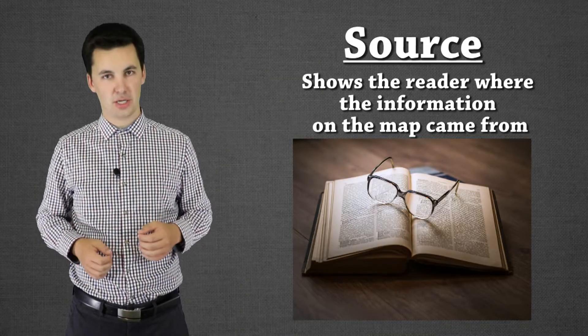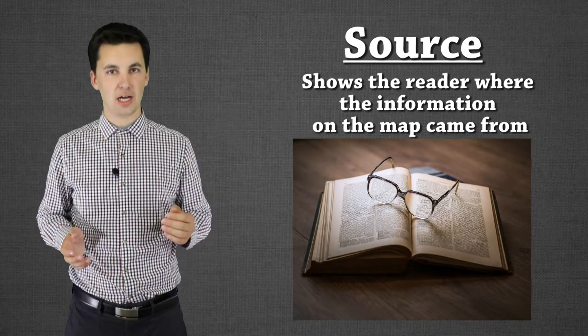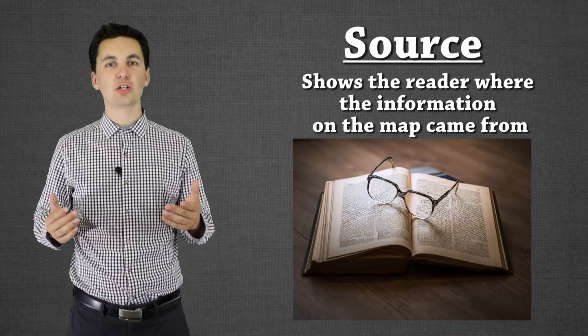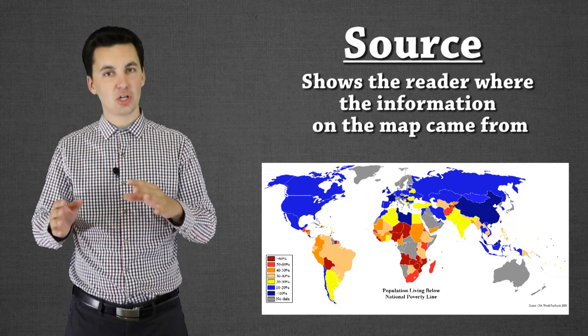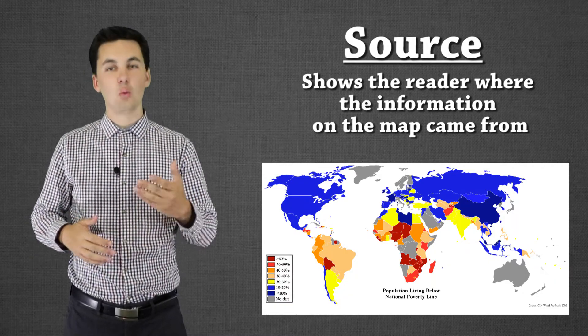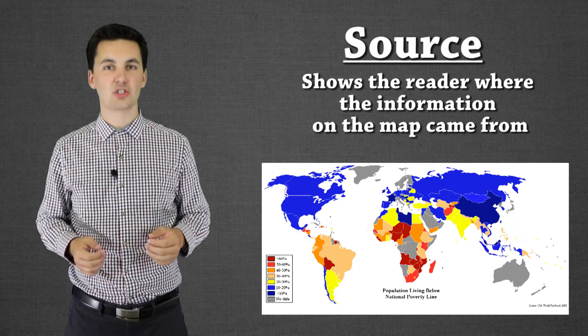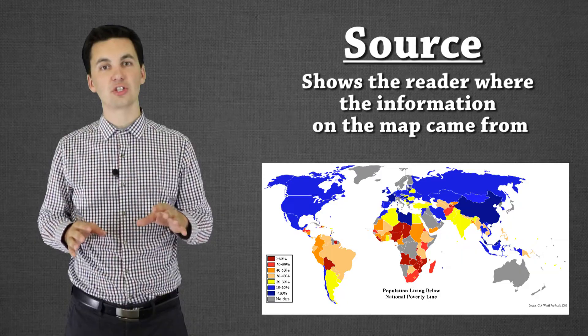The last part of TODALS is source and really the whole point of sources is for us to be able to understand where did the information come from. In human geography we're going to be using maps that have layers of data on them and we might have a map with multiple sources. This is just to make sure that we understand where the information is coming from. How much of it is from one site or another? Where is the data? Is it credible? Is it not? So this just helps us fact check and make sure that our map that we're interpreting is correct and that we're understanding it correctly.